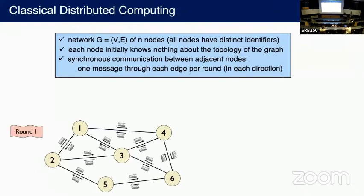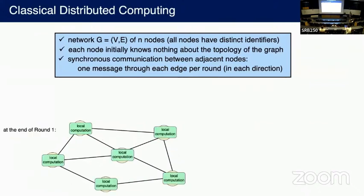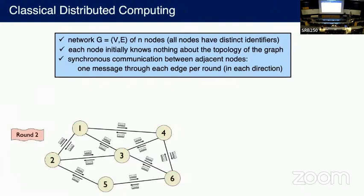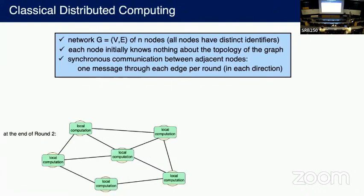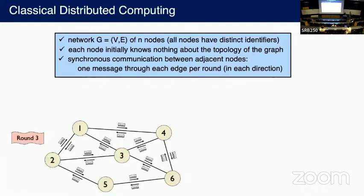At round one, all the nodes exchange messages, then you have local computation, then another round of communication, then local computation, and so on. We are mainly interested in the number of rounds needed to reach a conclusion.